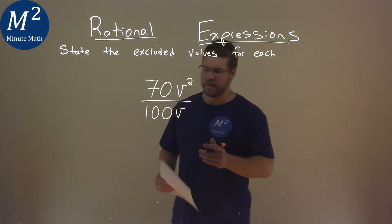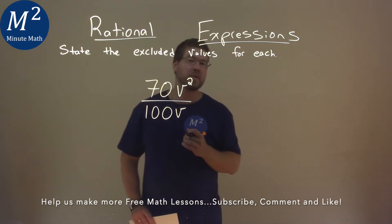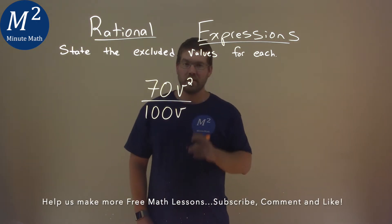We're given this problem right here, 70v squared over 100v, and we need to state the excluded value here.